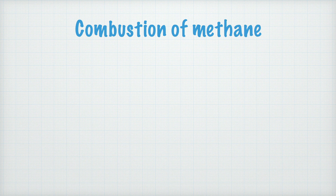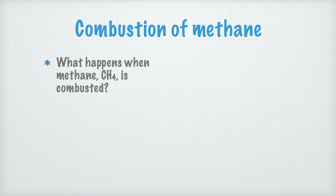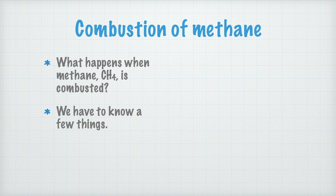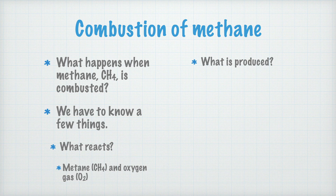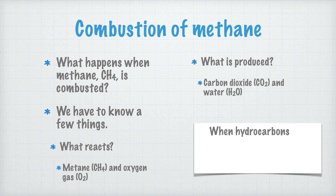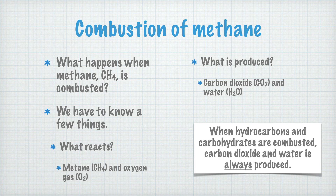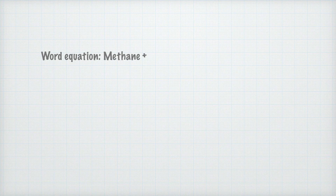Let's look at another example: the combustion of methane, CH₄. Before any calculation, we must consider what reacts and what forms. Methane CH₄ reacts with oxygen O₂ in a combustion reaction. When hydrocarbons like methane and carbohydrates like sugar are combusted, carbon dioxide and water always form. So the word equation is: methane plus oxygen gas turns into carbon dioxide and water.